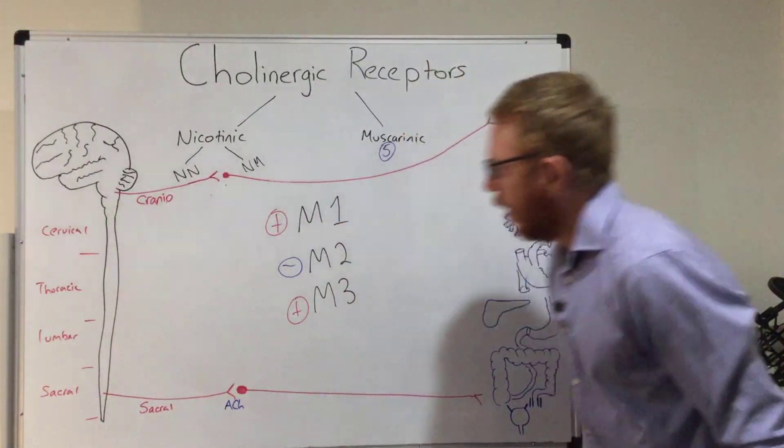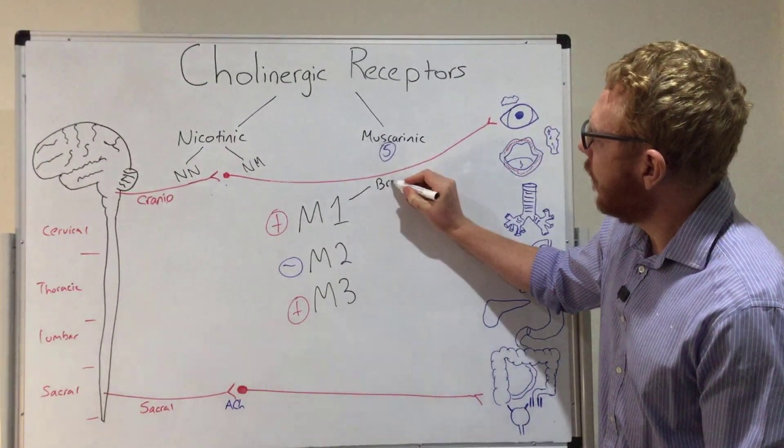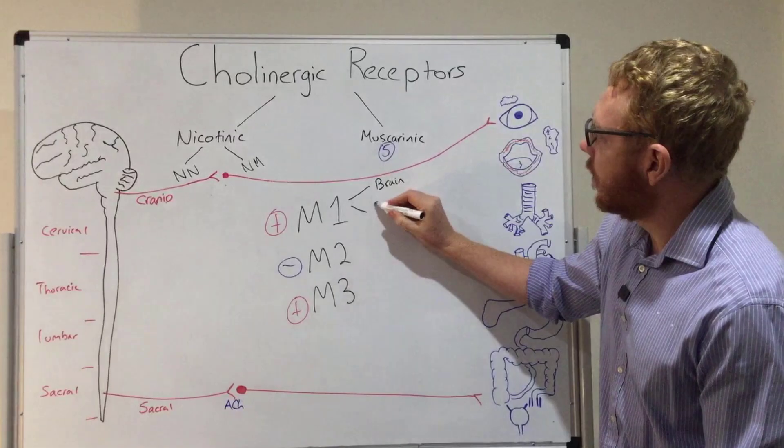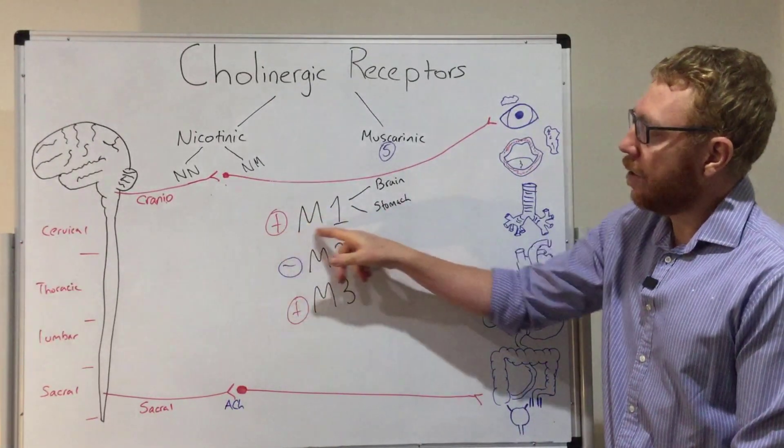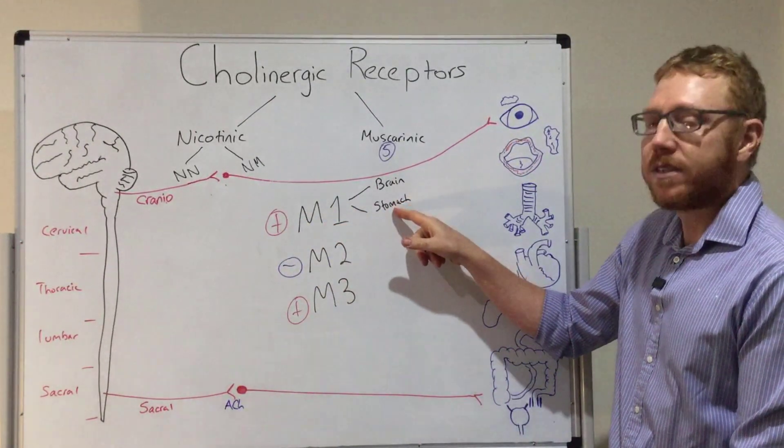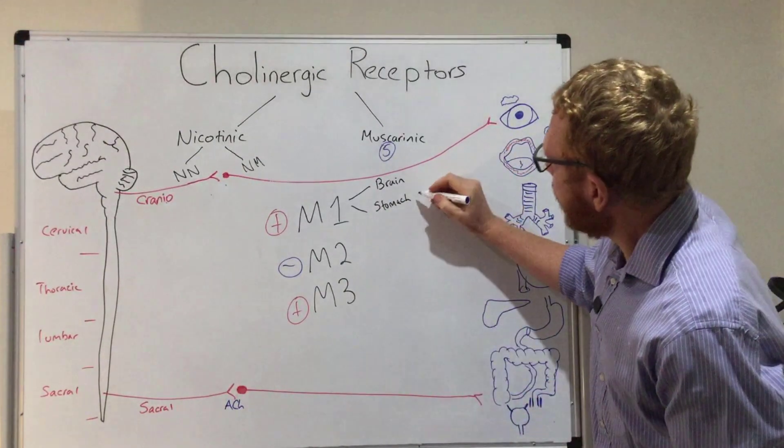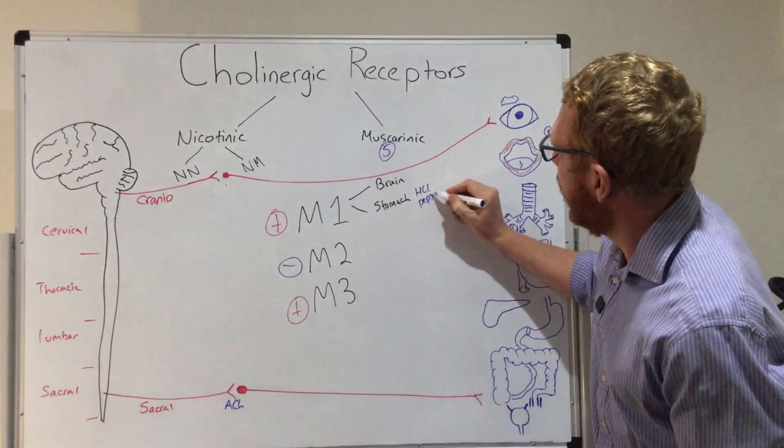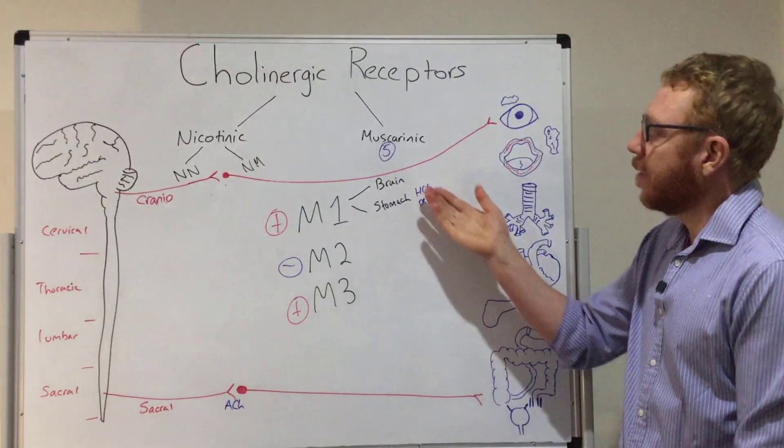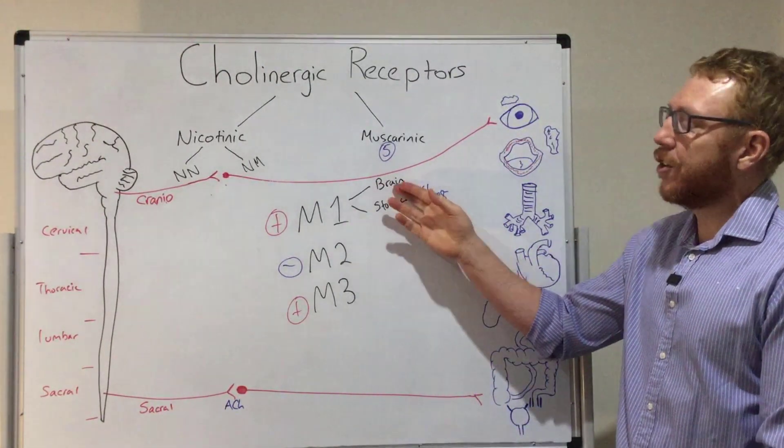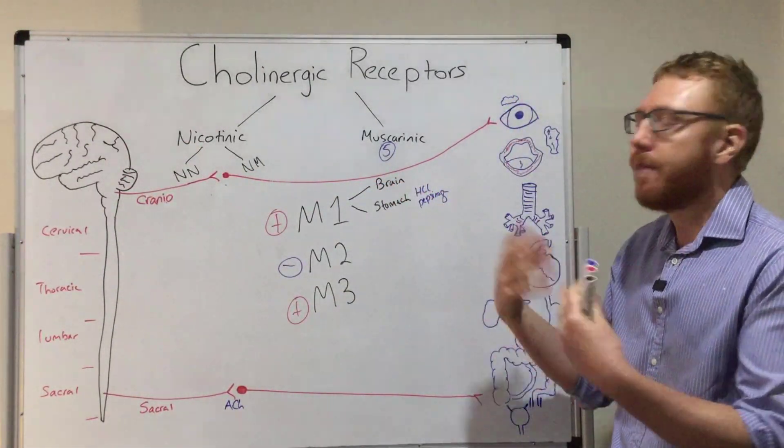Let's start with the M1s. Where do you find them? Well, it's pretty simple. There's only two main locations - in the brain and in the stomach. So essentially when you bind acetylcholine to M1 receptors in the stomach, the outcome is going to be releasing HCL and pepsinogen, which are both important digestive enzymes and acid to help break down the food. In the brain, essentially what happens is more ACH within the brain results in greater cognition and memory. So that's pretty straightforward.